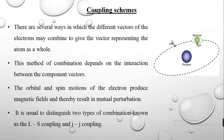As we have many electrons orbiting in different orbits, the atom as a whole can be taken as a vector sum of these vectors. Each of these motions leads to a magnetic moment — the electron possesses a magnetic moment due to orbital motion and also due to spin motion. Due to the interaction between these two magnetic moments, there are several combinations of the vector sum that can be taken in the atom, and these are known as coupling schemes.